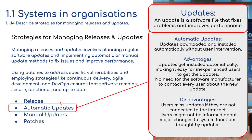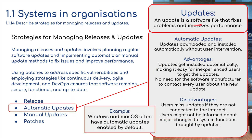Automatic updates. An update is a software file that fixes problems and improves performance. Updates are downloaded and installed automatically without user intervention. Sometimes there's a little message that pops up for you to agree, and then updates get installed automatically. Your TV is a good example — if you've got a smart TV, as soon as you turn it on it might say it needs to update.